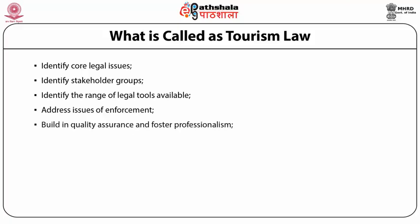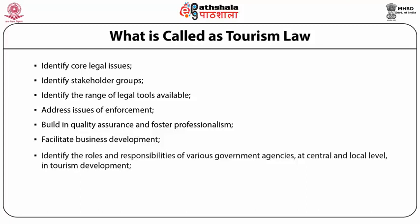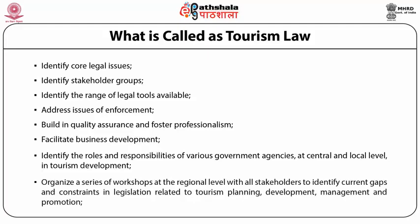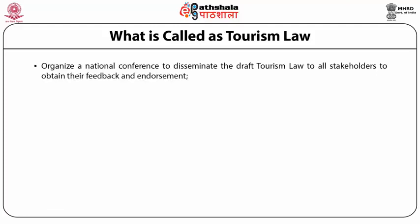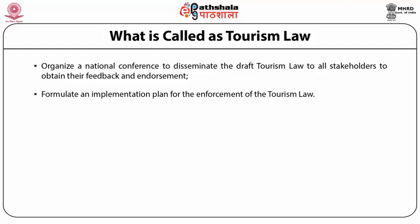Then, build in quality assurance and foster professionalism; facilitate business development; identify the roles and responsibilities of various government agencies at central and local level in tourism development; organize a series of workshops at the regional level with all stakeholders to identify current gaps and constraints in legislation related to tourism planning, development, management, and promotion; organize a national conference to disseminate the draft tourism law to all stakeholders to obtain their feedback and endorsement; and finally, formulate an implementation plan for the enforcement of the tourism law.